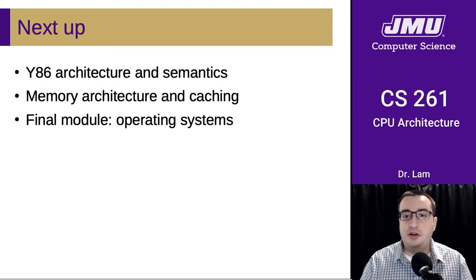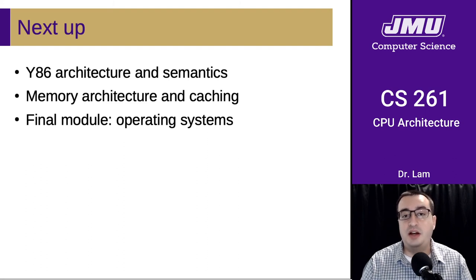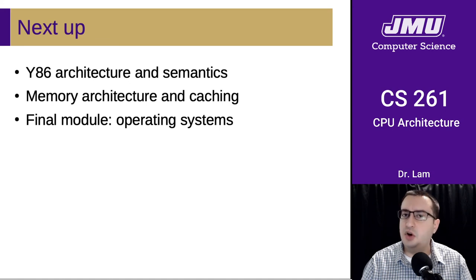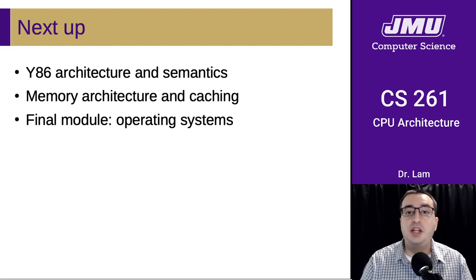That wraps up our discussion of CPU architecture. We'll spend a little bit of time studying Y86 architecture specifically, because we're asking you to code the Y86 architecture in an interpreter in project four. Then we'll wrap up this module by talking about memory — we haven't talked much about that yet, only a little about registers. We'll cover memory, caching, and that will round out module four and take us into the final module: operating systems, where we'll learn how hardware and user-level software interact via systems-level software.